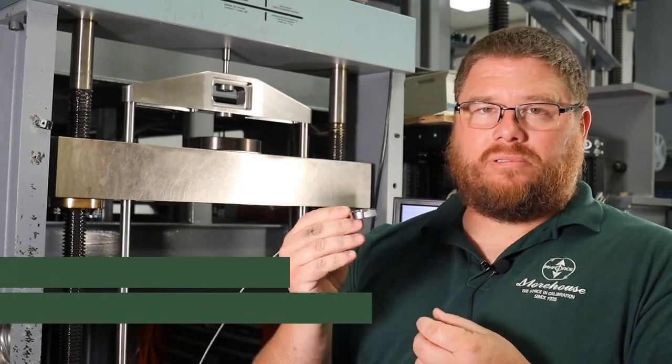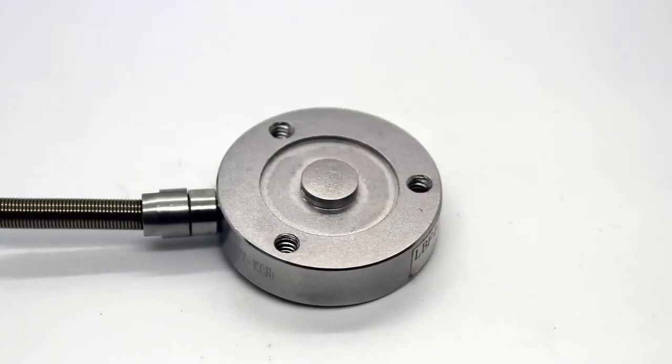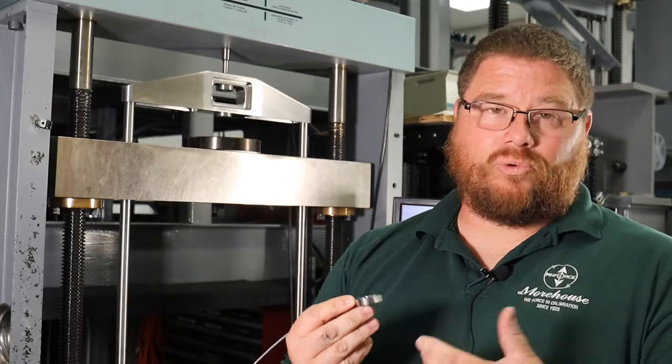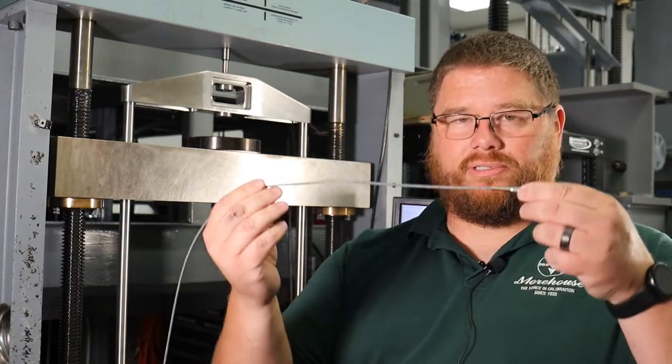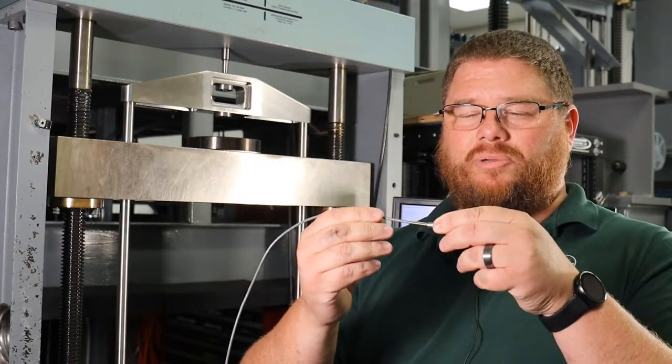We want to talk about button load cells - small, low-profile load cells with varying capacity, some very low, some high. We see these up to 10,000 pounds or more, and the difficulties involved in trying to calibrate them, one of which is the cable that's generally attached to small button load cells.